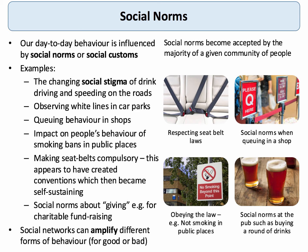People tend to obey social norms all the time. They observe white lines in car parks. They queue up in shops. They obey the law. They don't smoke in public places. Norms of reciprocity kick in — if you're in a group at a pub, you tend to take your turn to buy a round. Making seatbelts compulsory two or three decades ago was seen at the time as a major change in the law, but now it's become absolutely part and parcel of everyday life. It's become a convention which has then become self-sustaining.